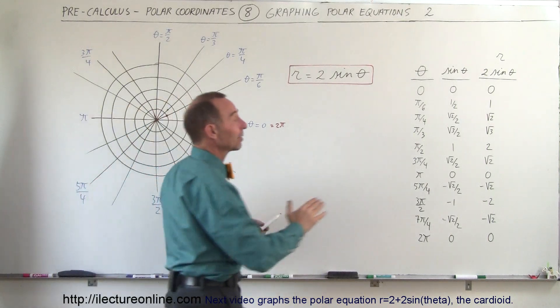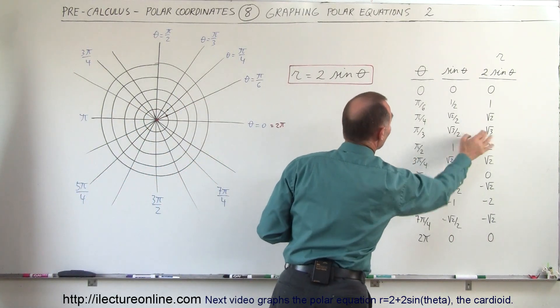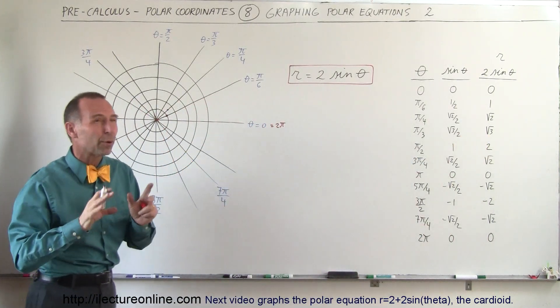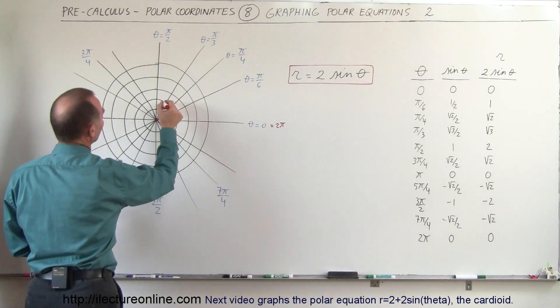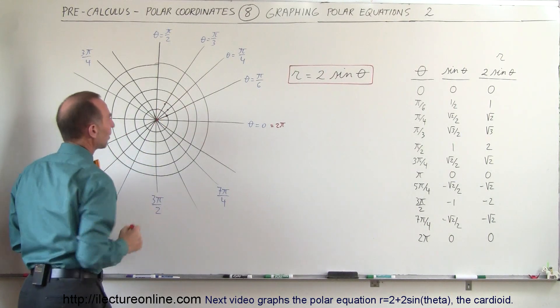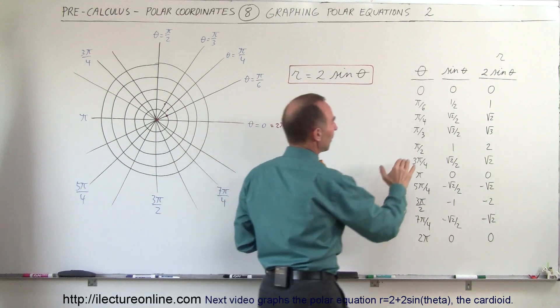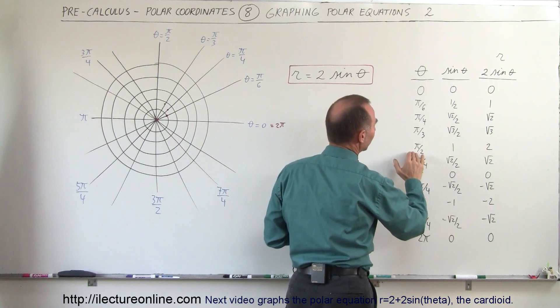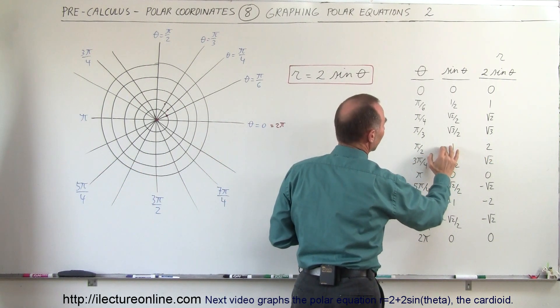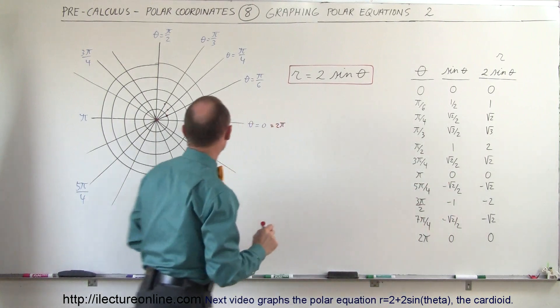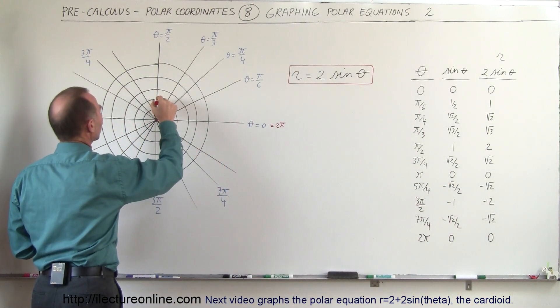Next we have π divided by 3, which is 60 degrees. We have the square root of 3, which is about 1.7, so at that point we're about right there. And then finally when theta is equal to π divided by 2, the sine of theta is 1 and r is equal to 2. That places us right there.